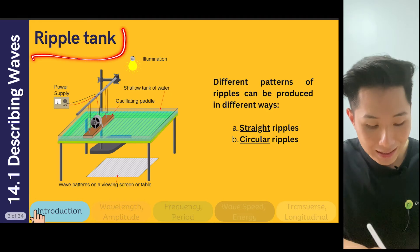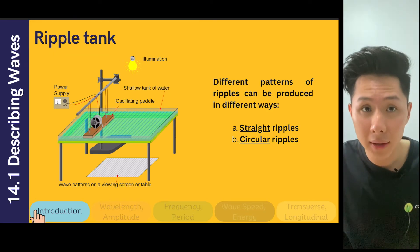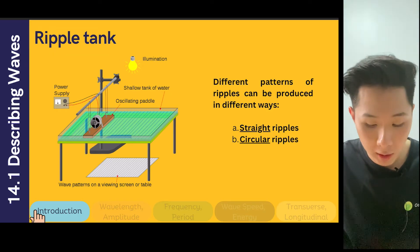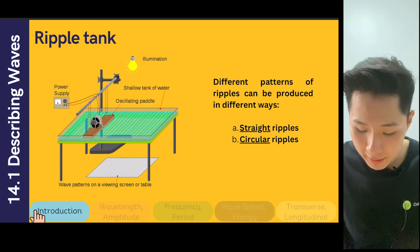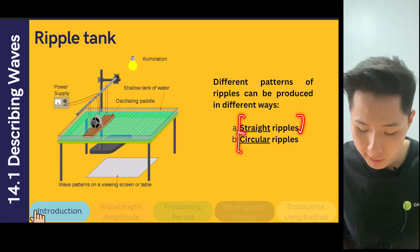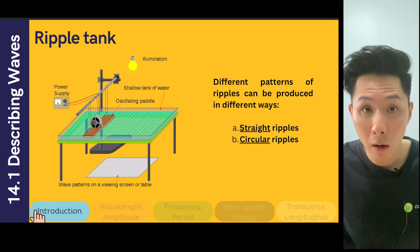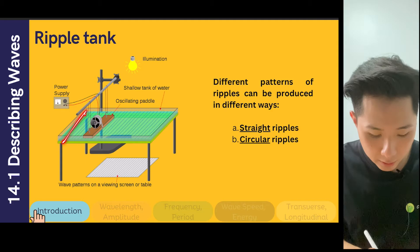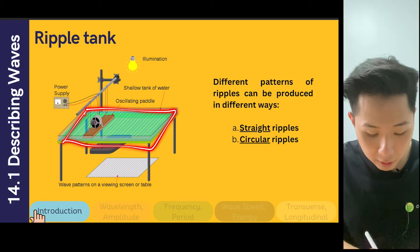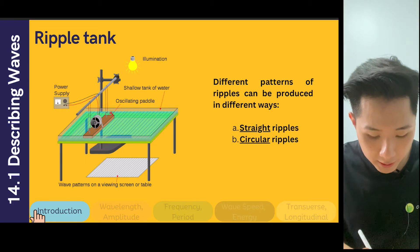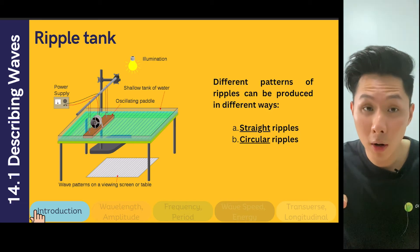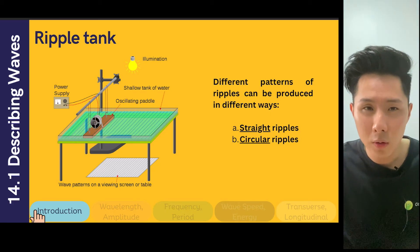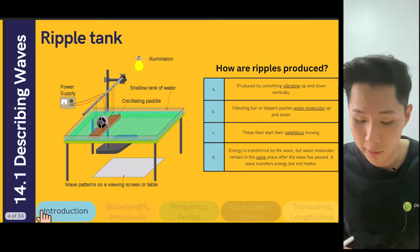In order to observe water waves, there is equipment called a ripple tank, and it can be used to produce straight ripples and circular ripples. It works with a shallow tank of water, and an oscillating paddle — once you turn it on, it will just keep vibrating to create water waves which you can observe.